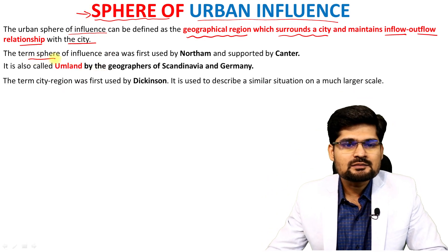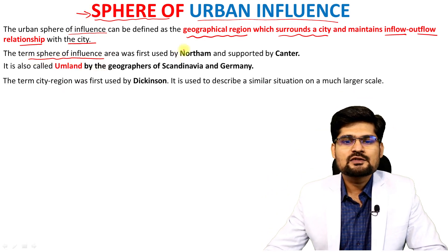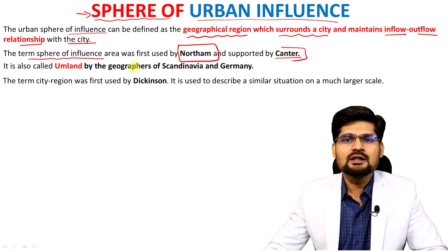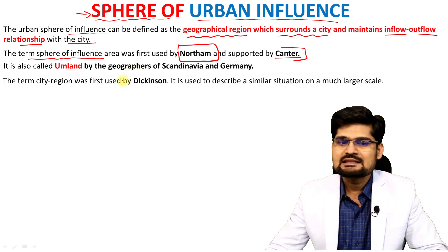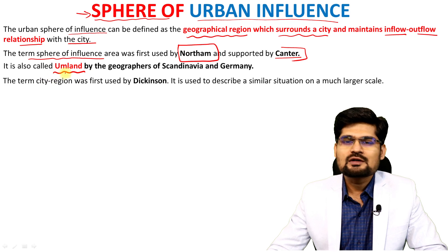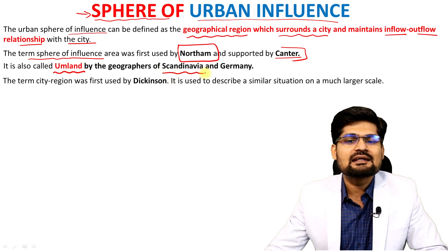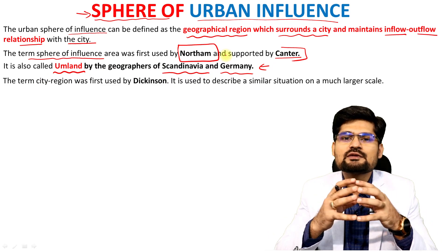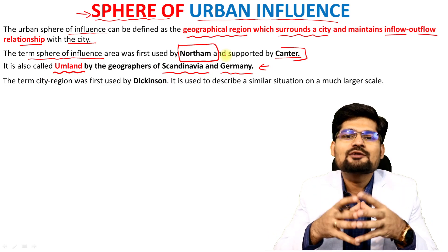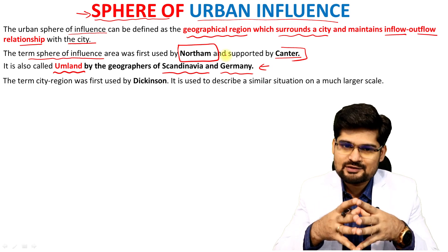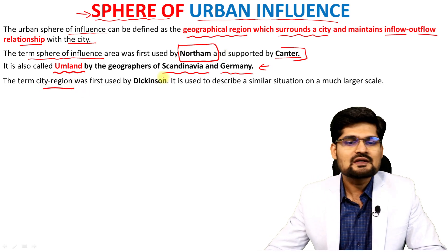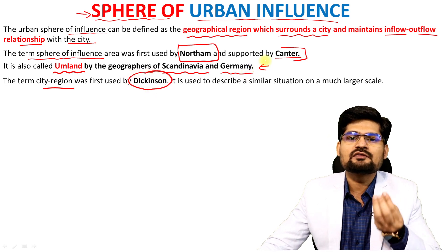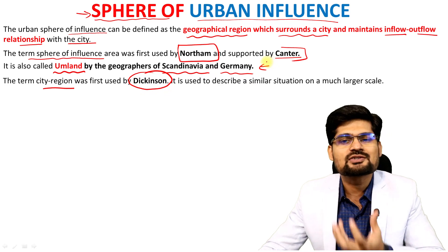The term 'sphere of influence area' was first used by the scholars Nordham and Cantor. Later, the term 'umland' was used by geographers of Scandinavian countries, Western Europe and Germany. The term 'city region' was given by Dickinson when he was trying to elaborate the concept of the influence of urban areas on their surrounding regions.